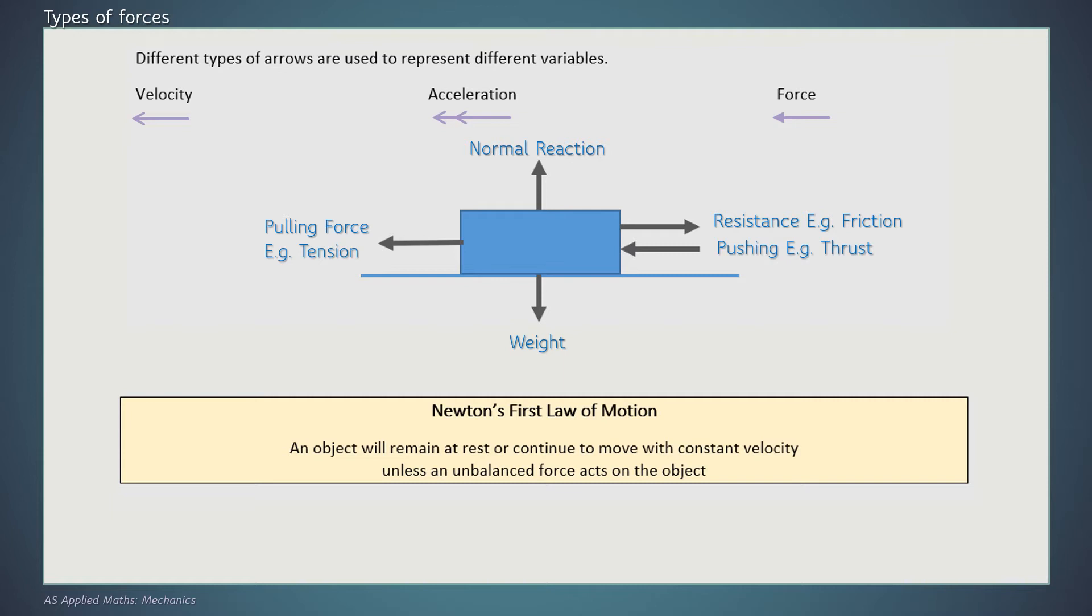Newton's first law of motion: an object will remain at rest or continue to move with constant velocity unless an unbalanced force acts on the object. If we apply a tension and we've got friction present, if those two forces are equal, then the particle is not moving anywhere. It has to be that one of those forces is greater in order for the particle to move.